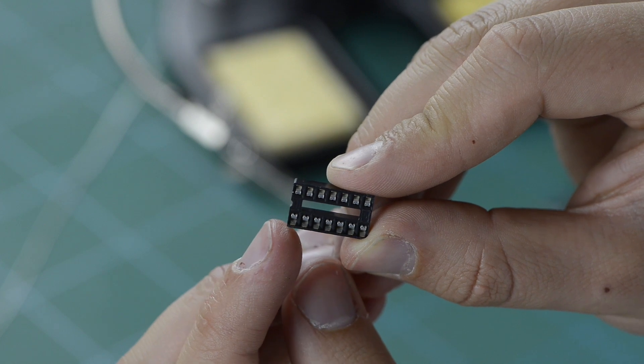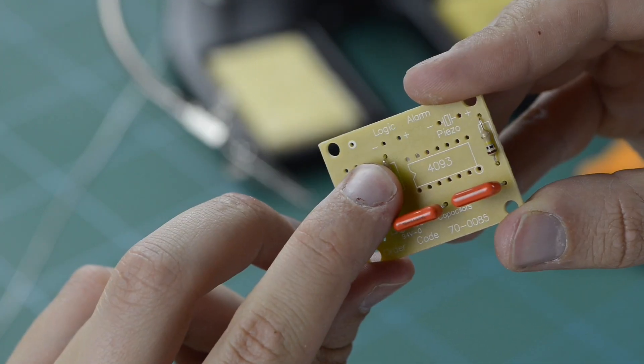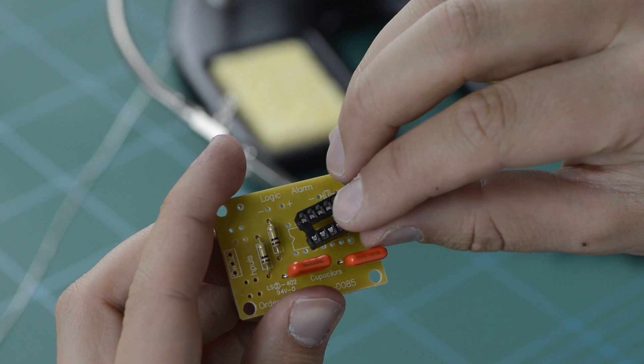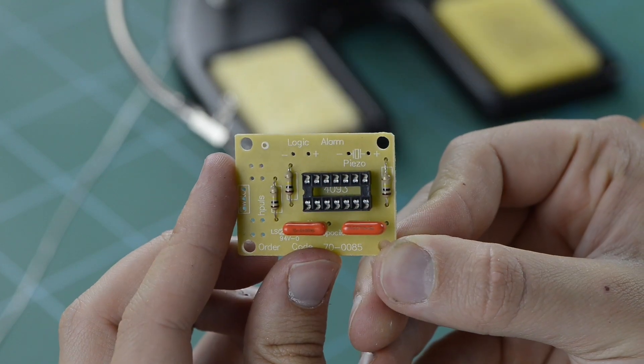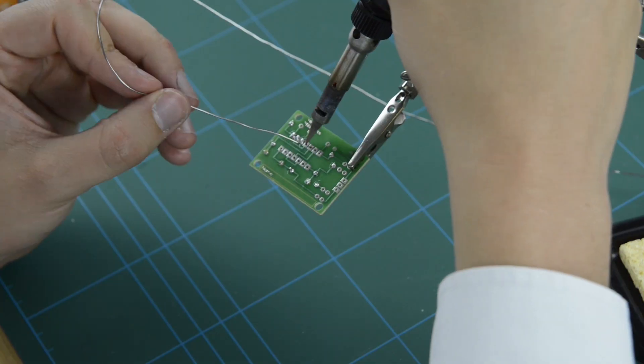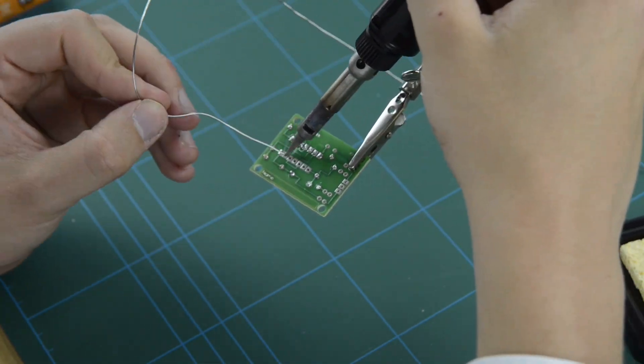Now take your DIL socket, taking note of the notch on the component, and place it in the board ensuring that the notch on the socket faces the side of the notch printed on the PCB itself. Bend the legs back against the board, solder into place, and remove any excess material.